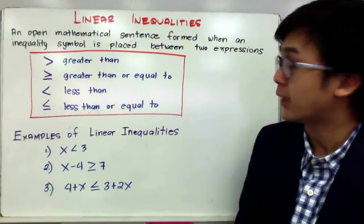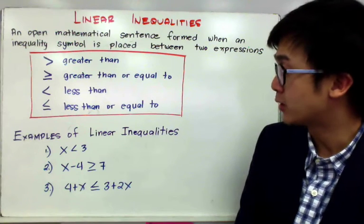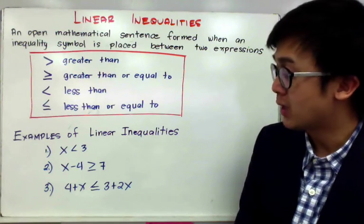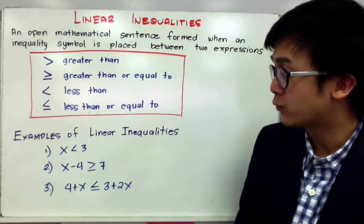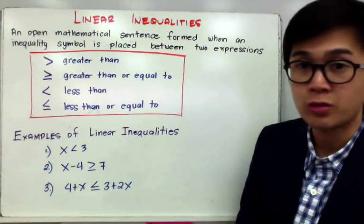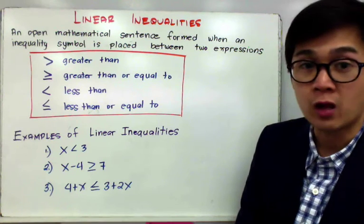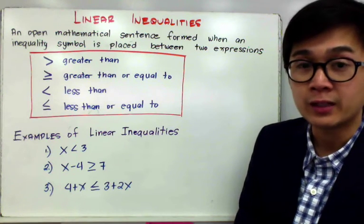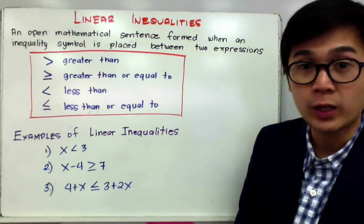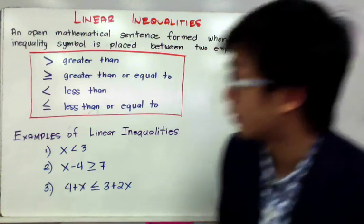We have four linear inequality symbols that we will use today. Examples of linear inequalities are: x less than 3, x minus 4 greater than or equal to 7, or 4 plus x less than or equal to 3 plus 2x. Today we're going to learn how to solve linear inequalities, and I'll show some linear equations so we can relate it to skills we've learned before.